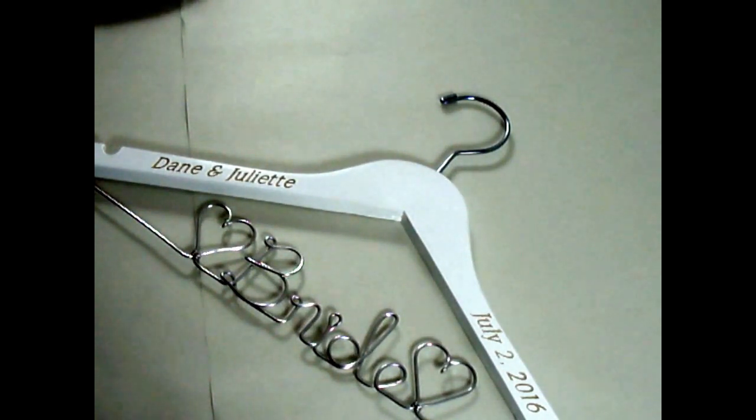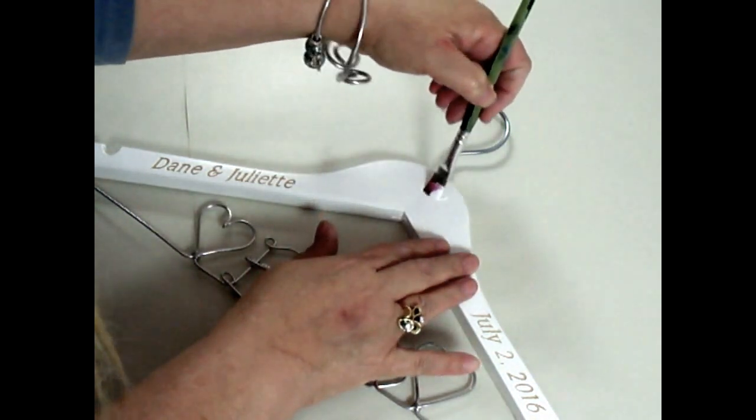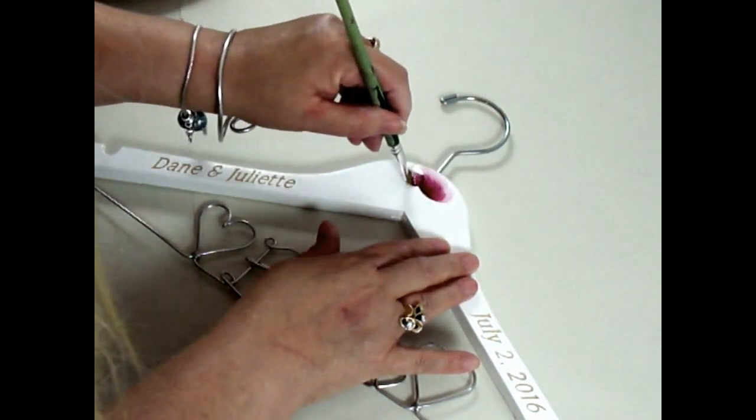Now to start off with, this is just going to be a simple rose pattern. I'm using folk art enamels. You can do yours with any color that you want, but for this style of hanger I do a lot of this burgundy rose with white paint.